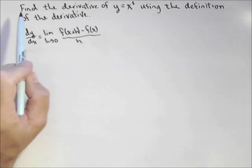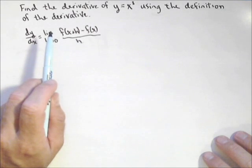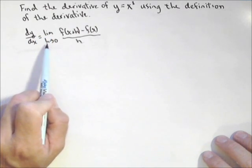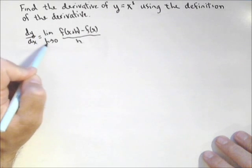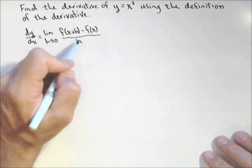In this video, we're going to try to find the derivative of y equals x cubed using the definition of the derivative. Now this is the definition of the derivative: dy/dx equals the limit as h goes to zero of f(x+h) minus f(x) over h.